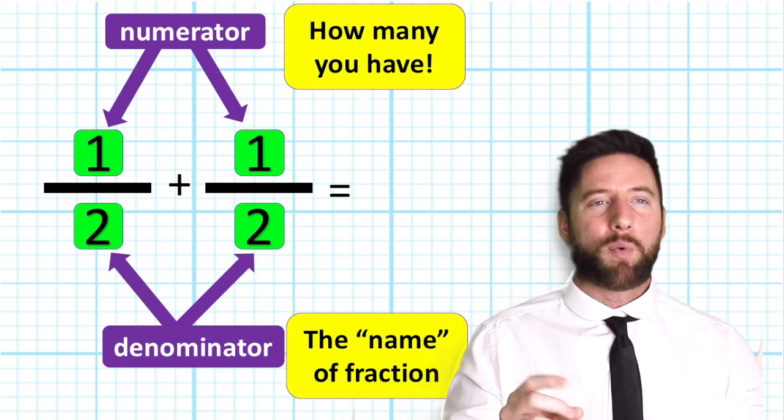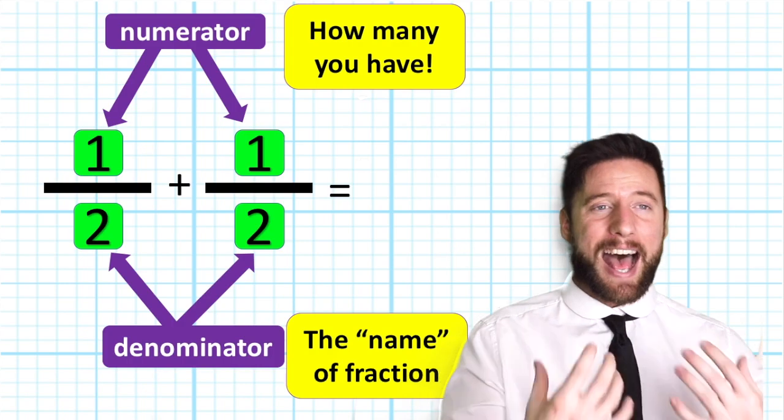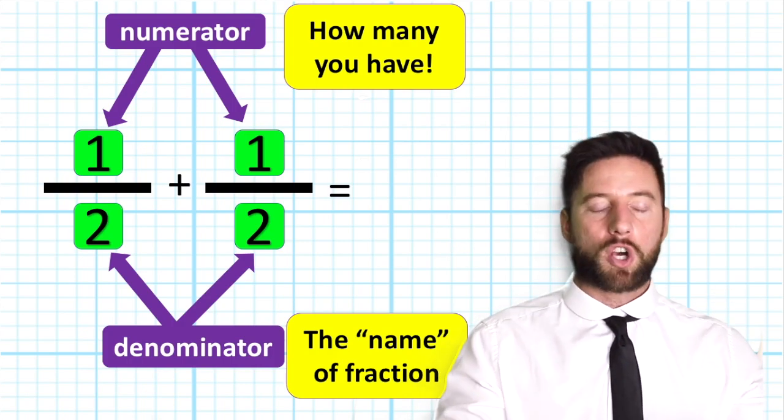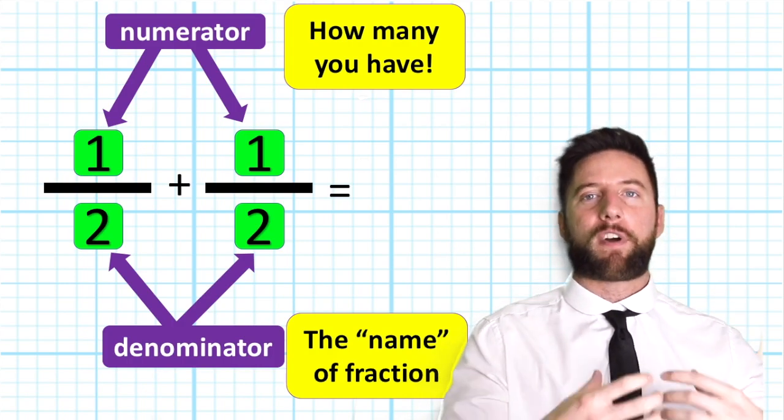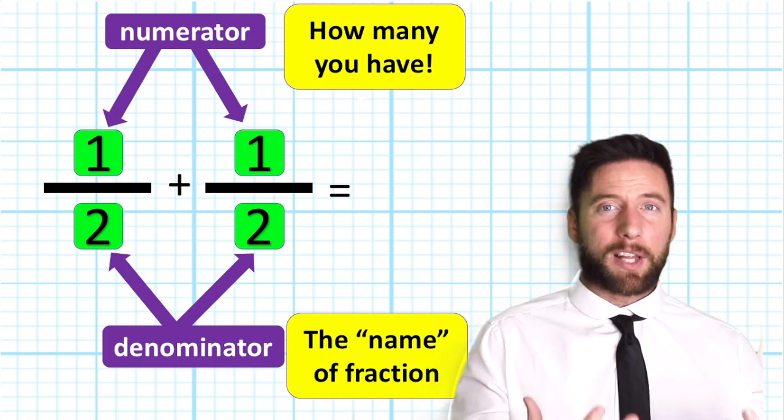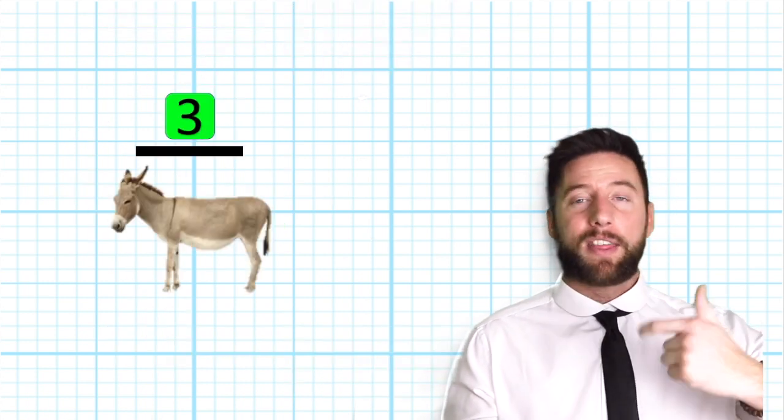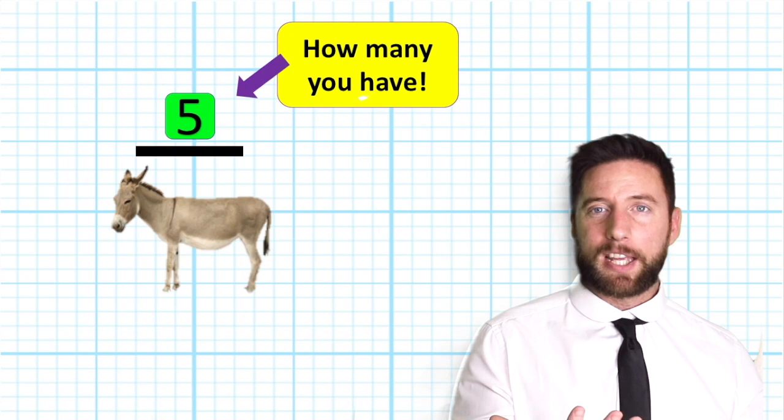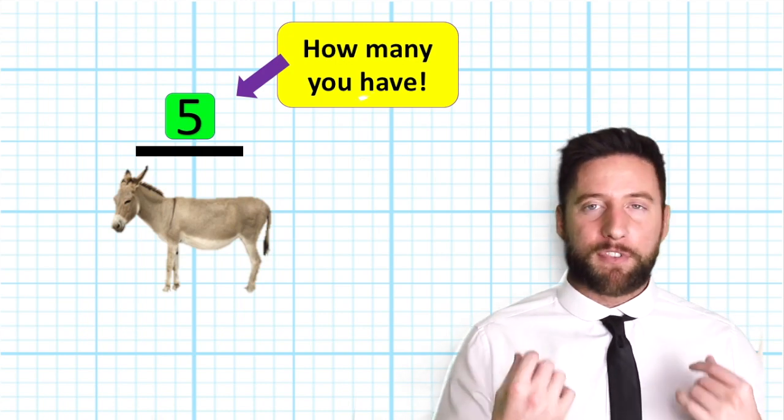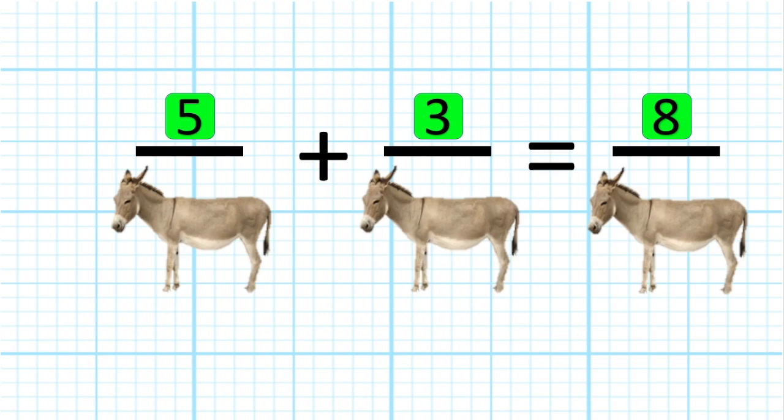Once we can understand that, once we can start to think of a numerator as the number, the volume, the quantity of the fractions we have, similar to saying one donkey, three donkeys, five donkeys. It's just the name of the fraction. So if we think of it like that, the numerator is how many we have and the denominator is what the name is, then we can just simply add the numerators or subtract the numerators to give us our new value.